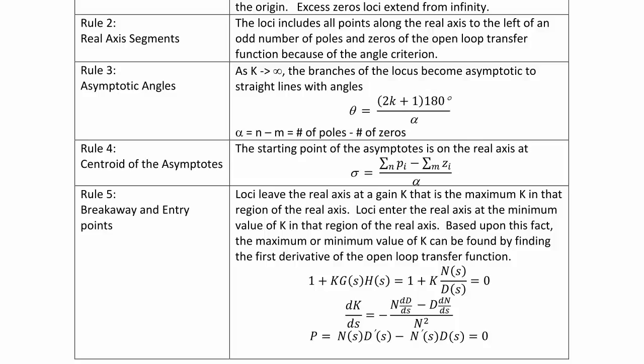And finally, Rule 5, Breakaway and Entry Points: Loci leave the real axis at a gain k that is the maximum k in that region of the real axis. Loci enter the real axis at the minimum value of k in that region of the real axis. Based upon this fact, the maximum or minimum value of k can be found by finding the first derivative of the open-loop transfer function. So this would be 1 + k·N(s)/D(s) = 0. You take the derivative of k with respect to s, and you get N·dD/ds - D·dN/ds, which simplifies to the polynomial N(s)D'(s) - N'(s)D(s) = 0.